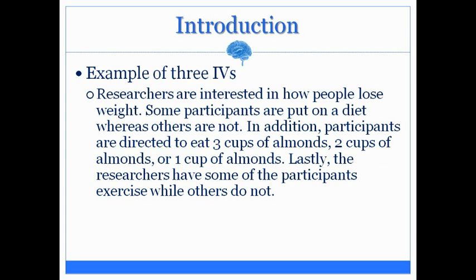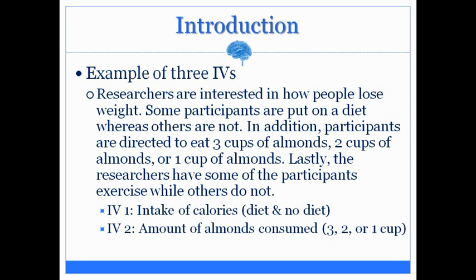Here's an example of three independent variables — please try this one for yourself. Researchers are interested in how people lose weight. Some participants are put on a diet while others are not. Participants are also directed to eat three cups, two cups, or one cup of almonds. Lastly, some participants exercise while others do not. The three independent variables are: first, intake of calories — diet or no diet; second, the amount of almonds consumed — three, two, or one cup; and third, the amount of exercise — some or none.